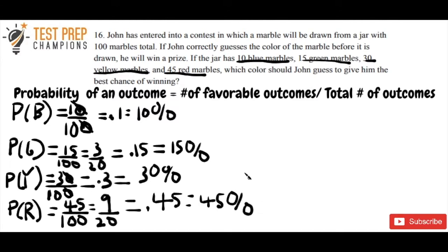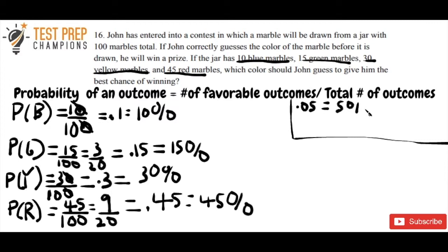Just note that if you're converting between percents and decimals, be careful. If you have 0.05, that's not 50% — that's equal to 5%. But if you have 0.5, that would be equal to 50%. So if you've got a decimal zero then the number — like 0.03 that's 3%, 0.02 that's 2% — whereas 0.3 is 30%, etc. Let me know if you'd like me to make a video on those conversions.